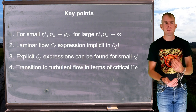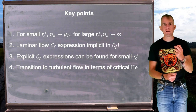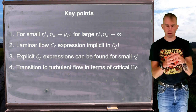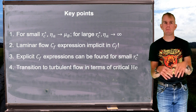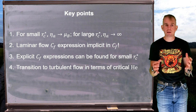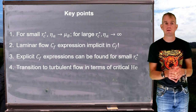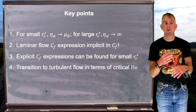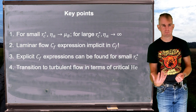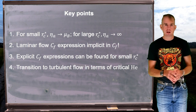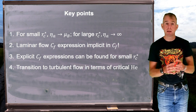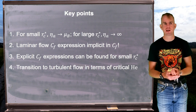Some key points: in terms of apparent viscosity, for small R_C* — small normalised core radius — my apparent viscosity approaches that of Newtonian. But for large R_C*, my apparent viscosity diverges to infinite. This corresponds to fully yielded flow and unyielded flow respectively. We developed friction factor expressions and found that in laminar flow we have something new: an implicit friction factor expression.